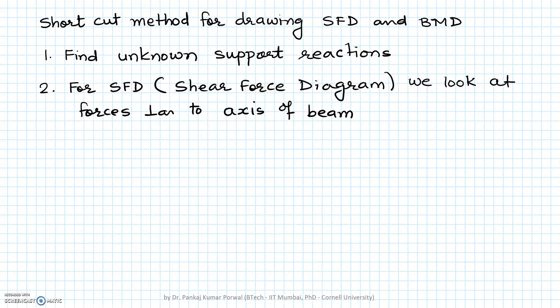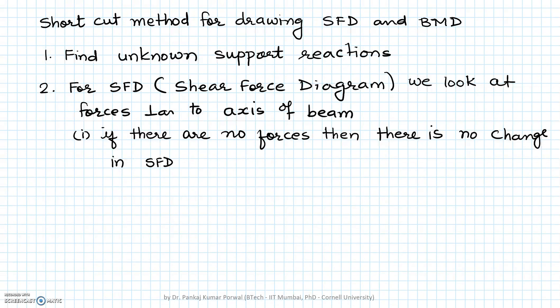Once we have that diagram, we look for vertical forces, or forces which are perpendicular to the axis of the beam. For different segments of the beam, we may have different situations, and depending on those situations, the variation in the shear force diagram will be different. If there are no forces perpendicular to the axis of the beam for a segment, then there will be no change in shear force diagram for that segment.